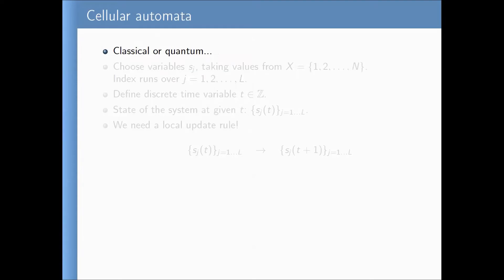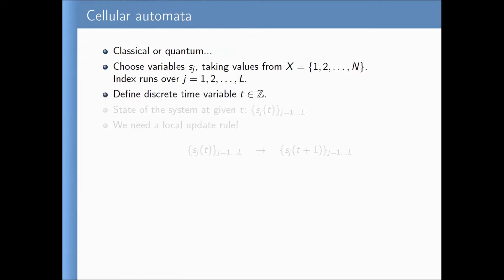We deal with cellular automata which can be classical or quantum. In the classical case, we have a set of variables s_j taking values from a finite set — say, numbers from one to n. The index j runs from one to L, so we imagine cells put along a line from one to L. We want periodic boundary conditions, so the cells are on a circle. We also have a discrete time variable taking integer values.